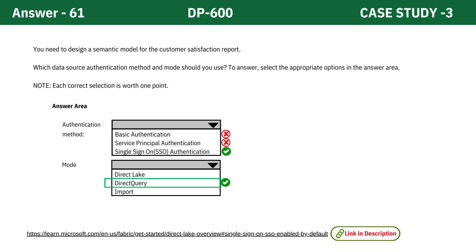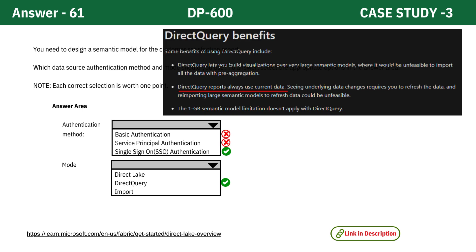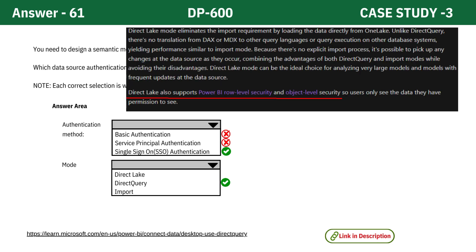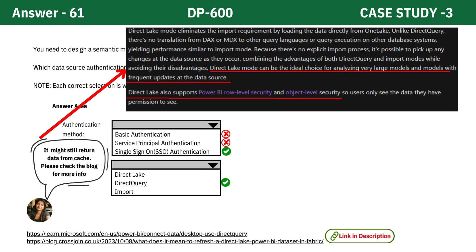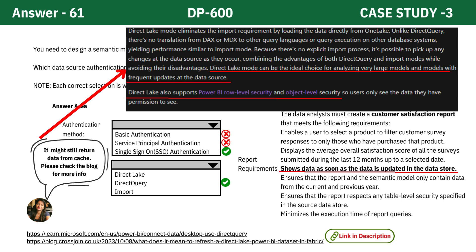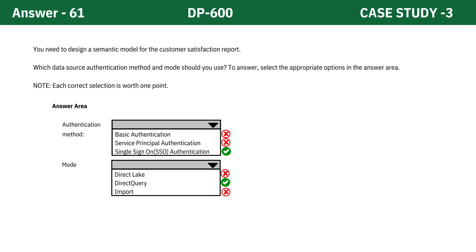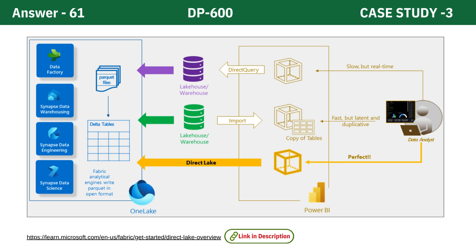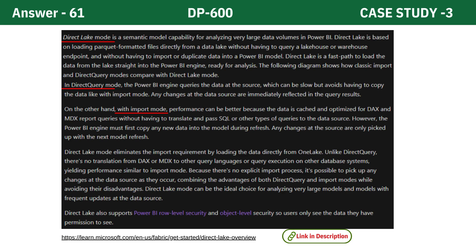For the mode, Direct Query is chosen because it ensures that the data displayed in reports is as current as possible by querying the data source in real-time whenever the report is accessed. While Direct Lake is a viable option due to its efficiency and support for row-level security, it does not guarantee immediate data updates as it may rely on cached data, which can be a limitation when the requirement specifies that data needs to reflect updates immediately. By selecting SSO authentication and Direct Query mode, we ensure both secure and efficient access to the most current data, aligning with the project's security and performance requirements. For a deeper understanding, check out the provided links in the video description.